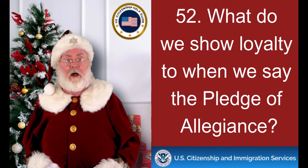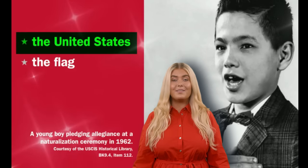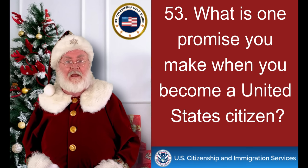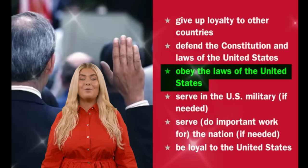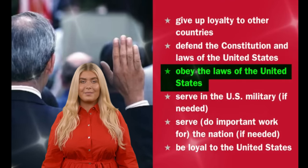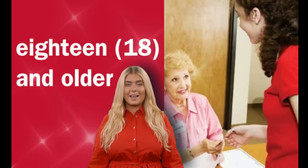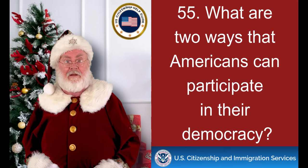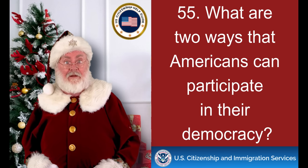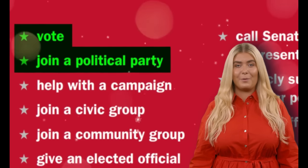What do we show loyalty to when we say the Pledge of Allegiance? What is one promise you make when you become a United States citizen? Obey the laws of the United States. How old do citizens have to be to vote for president? What are two ways that Americans can participate in their democracy? Vote. Join a political party.